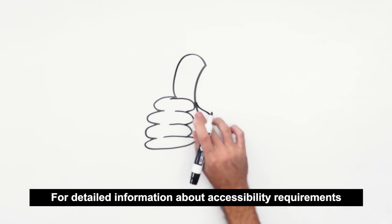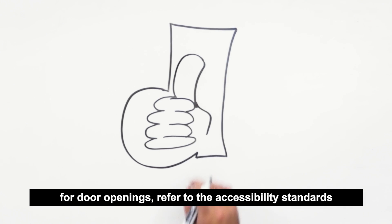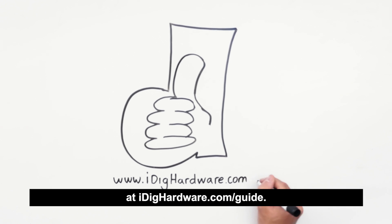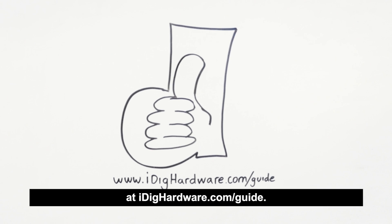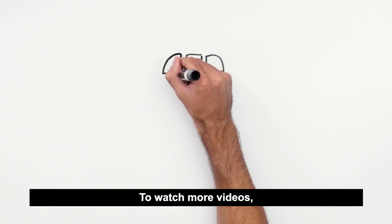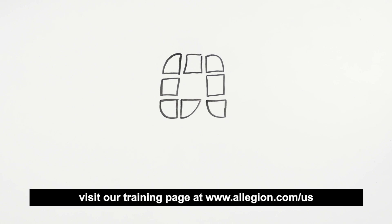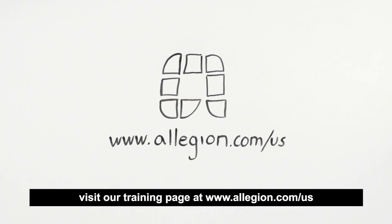For detailed information about accessibility requirements for door openings, refer to the accessibility standards or download the Allegiant Code Reference Guide at idighardware.com/guide. To watch more videos, visit our training page at www.allegiant.com/US.